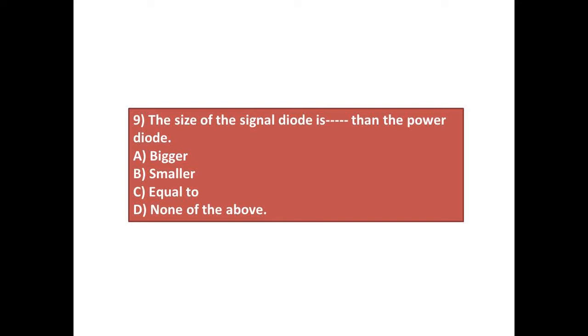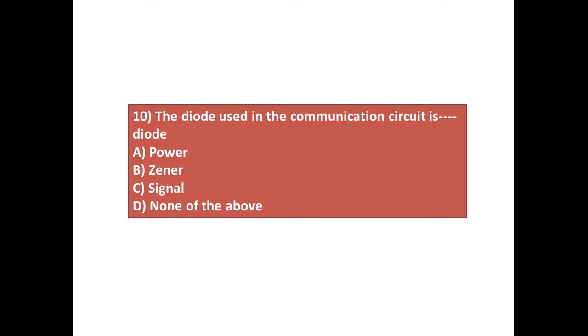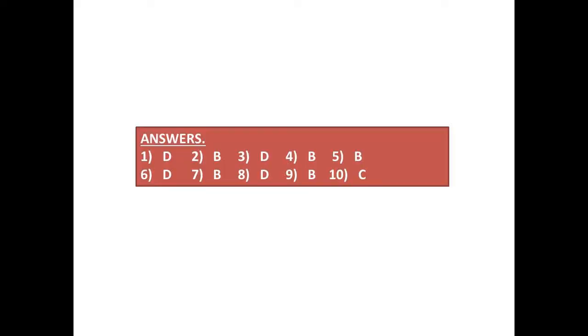Question number 10: The diode used in the communication circuit is dash diode. Answers: A) power, B) zener, C) signal, D) none of the above. Answers: 1D, 2B, 3D, 4B, 5B, 6D, 7B, 8D, 9B, 10C.